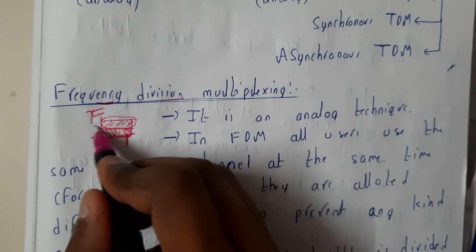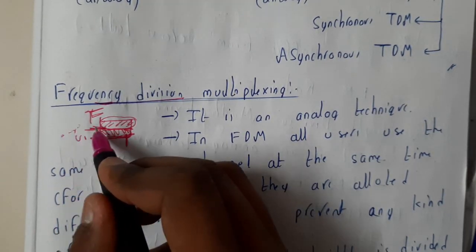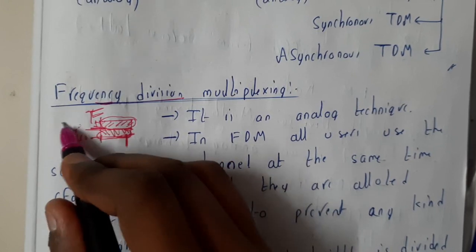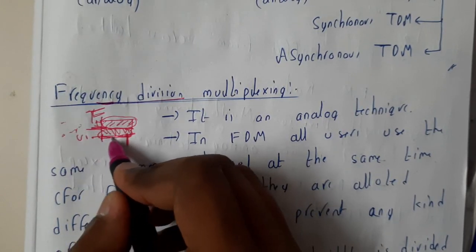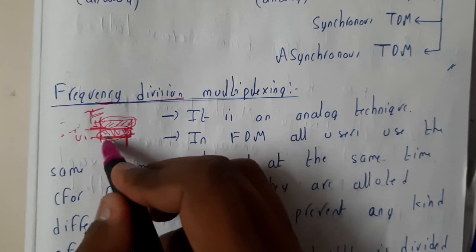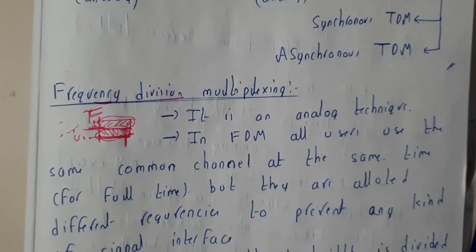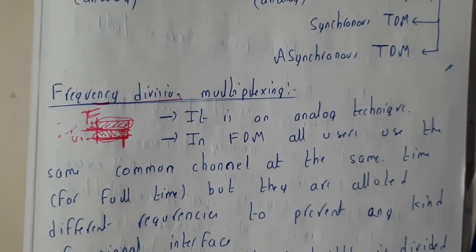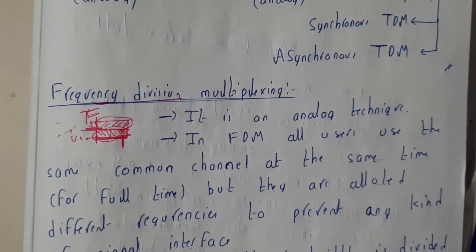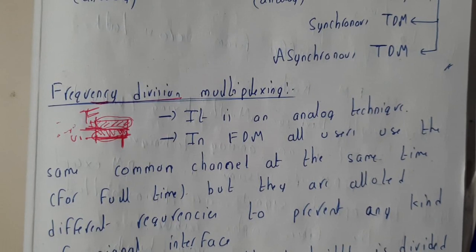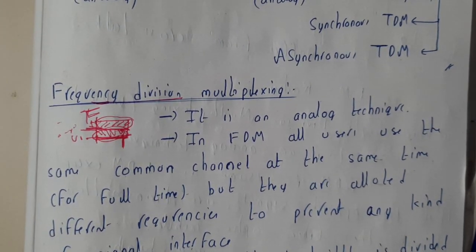For a particular user, user 1 will be having a frequency from 0 to 500, whereas user 2 will be having 500 to 7000, and so on. They can use this frequency for any amount of time — there is no limit for time. So frequency is divided into parts between the users.